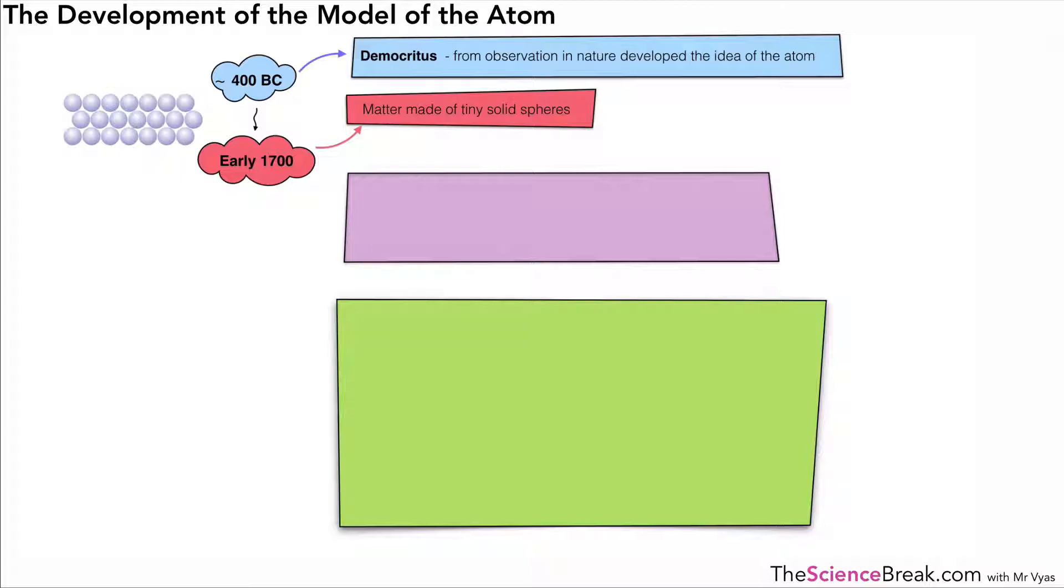If we then move on to the late 1800s, so just under 200 years later, we have the discovery of a very important particle and that was the discovery of electrons.